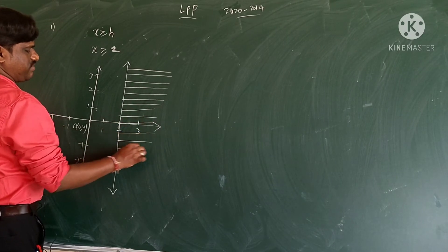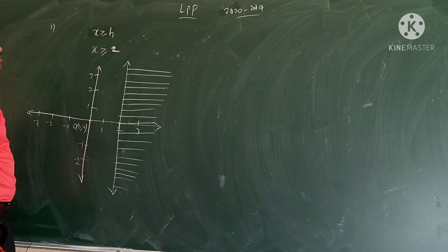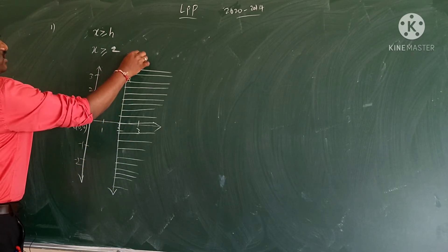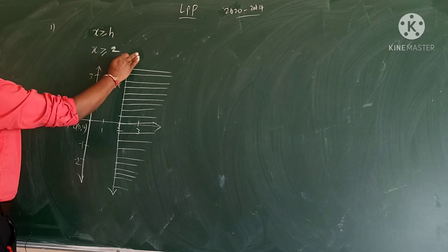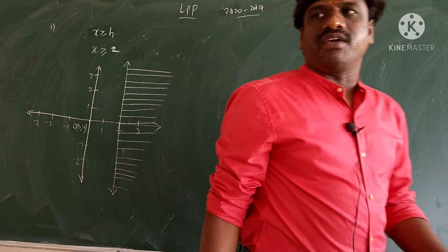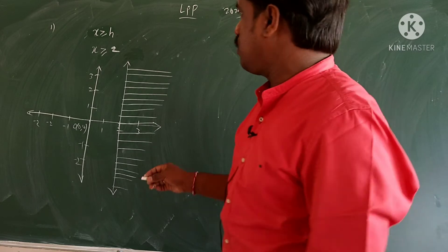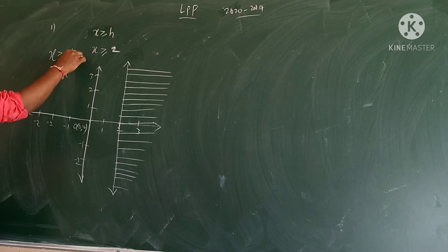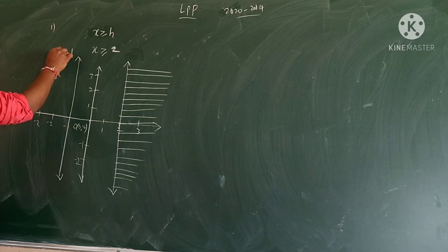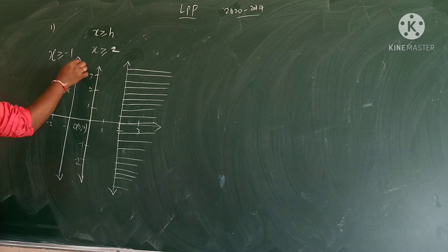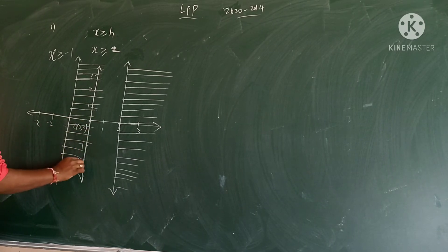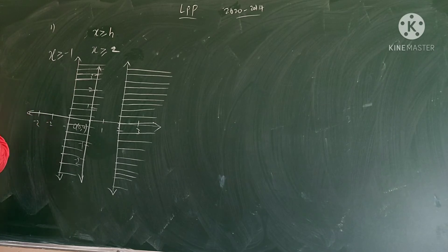If it is h, we don't know the value, so you can draw it anywhere. They will give you values like 2, 3, 1, -1, -2. For example, if they ask x greater than -1, you draw the line at -1, and shade to the right side since it's greater than. If you don't have the equal to symbol, you need to give a little gap and then shade.